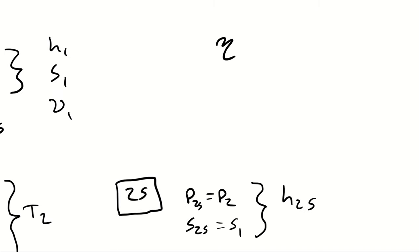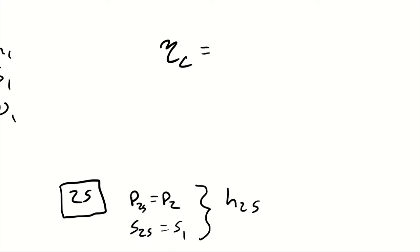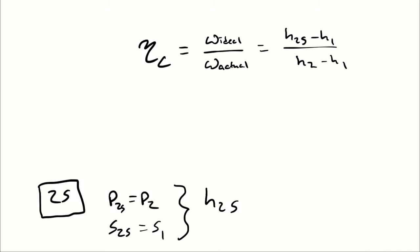So, here, eta to C represents the proportion of actual and ideal work. Hey, quick question. Does it take more work to compress something in an ideal world, or in reality, where there's friction and stuff? You're correct. It's reality where there's friction and stuff. So, eta to C is equal to H2s minus H1 divided by H2 actual minus H1.